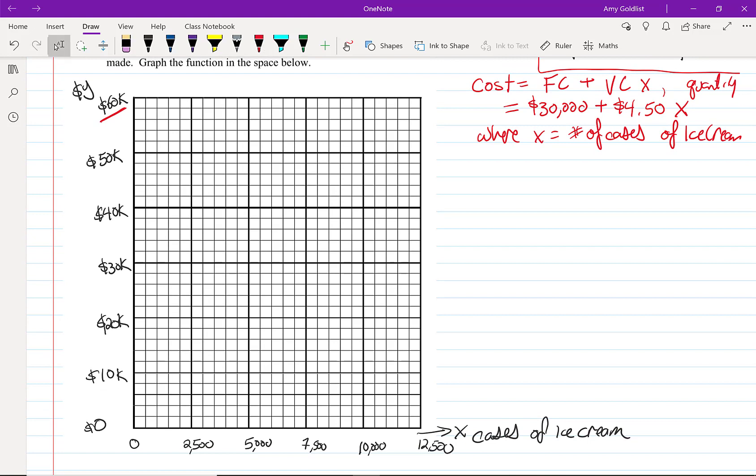I've gone ahead and labeled this because I know what the axes are. When you're doing this in the real world, you'll often be using Excel or a graphing program. So I'm gonna label it. Every five is going to be $10,000 on the y-axis. Cost is always on the y-axis. And I've put 2,500 for every five blocks on the x-axis.